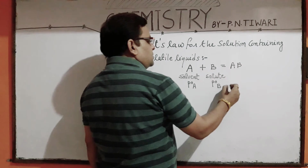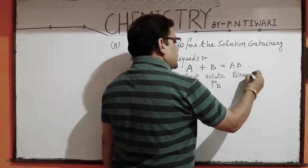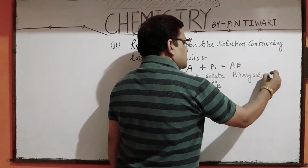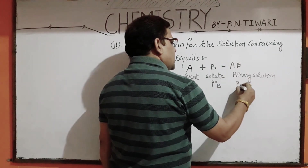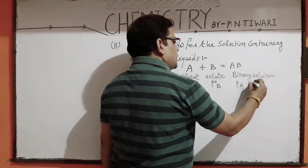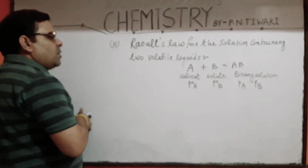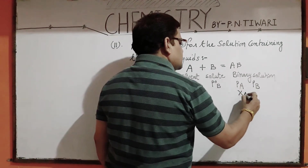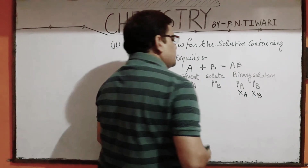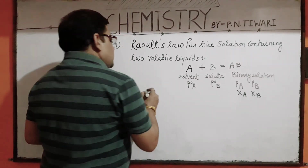In this binary solution, suppose PA is the partial vapour pressure of solvent and PB is the partial vapour pressure of solute. XA and XB are the mole fractions of solvent and solute respectively. Then according to Raoult's first law: